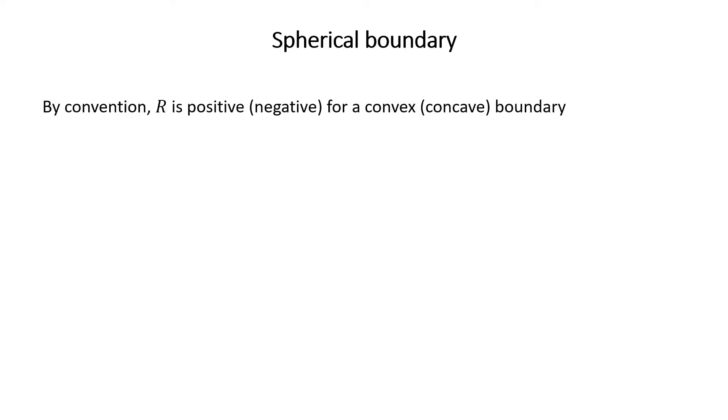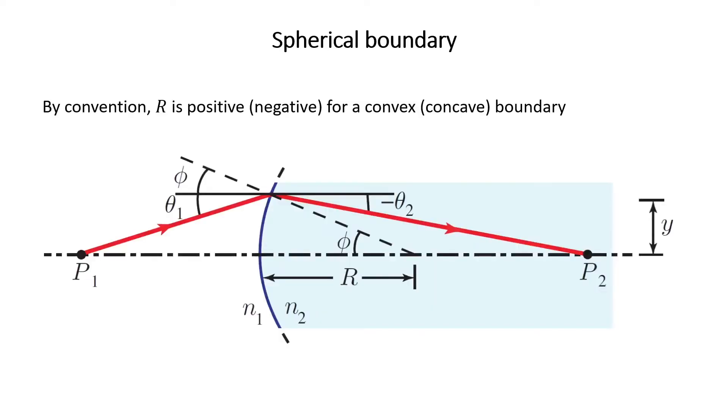In this video, we learn about spherical boundaries and lenses. By convention, the radius of curvature R is positive for a convex boundary and negative for a concave surface.